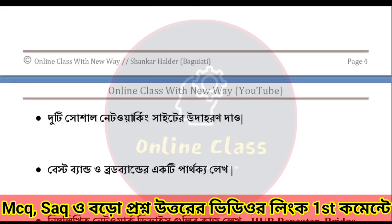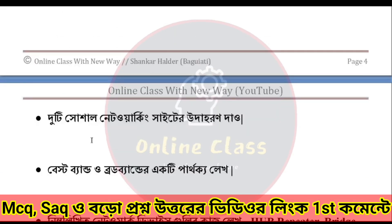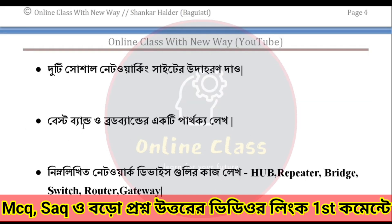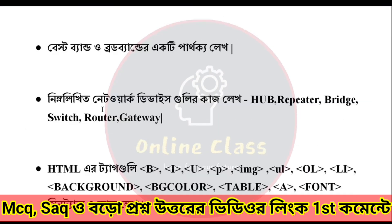Next: social networking site is 2 numbers. Next: baseband or broadband is 1 number. Next: network devices — hub, repeater, bridge, switch, router, gateway.